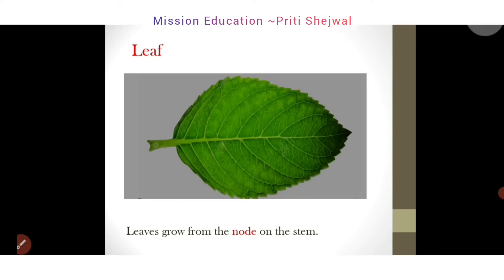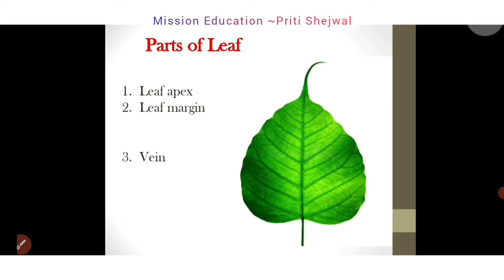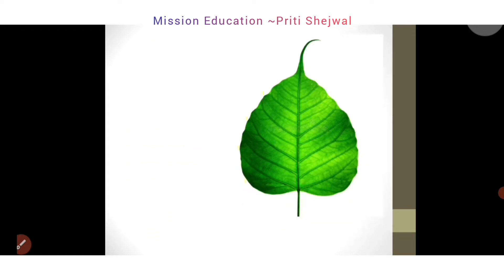So let's learn the parts of a leaf. You can see the image of a leaf. Let's name them: first is leaf apex, second is leaf margin, third is vein, fourth is mid vein, fifth is leaf blade, sixth is petiole, seventh is stipule, and eighth is leaf base.